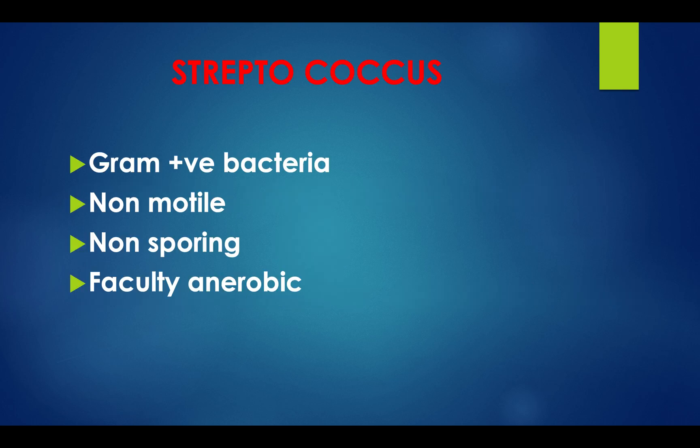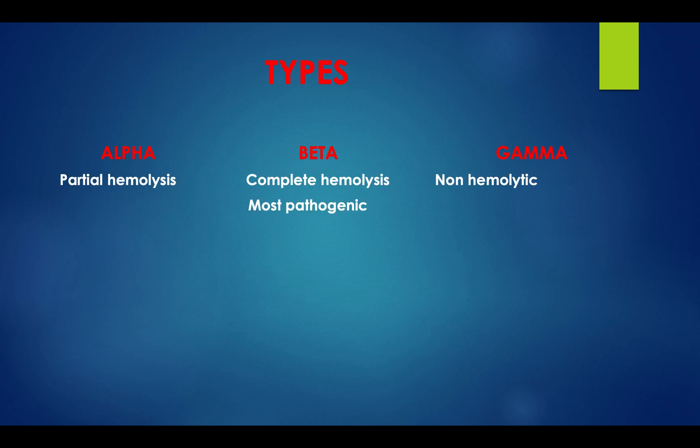Streptococcus is a gram-positive bacteria, non-motile, non-sporing, and facultative anaerobic. Its types are alpha, beta, and gamma. In alpha: partial hemolysis; in beta: complete hemolysis — it is the most pathogenic organism; gamma is non-hemolytic.